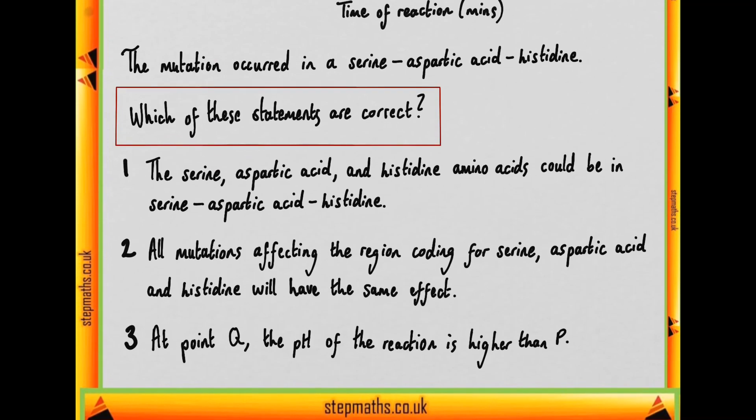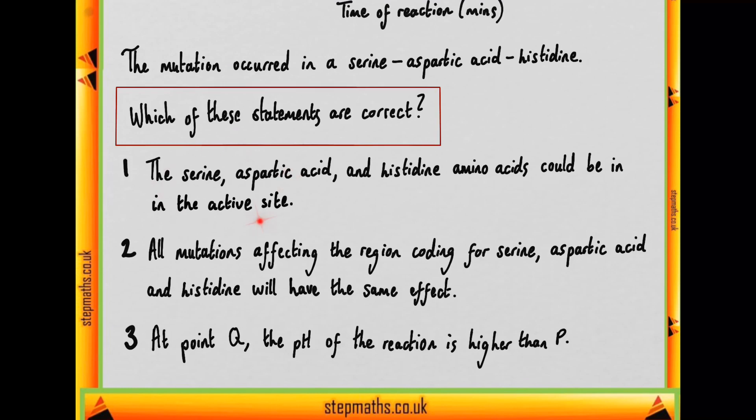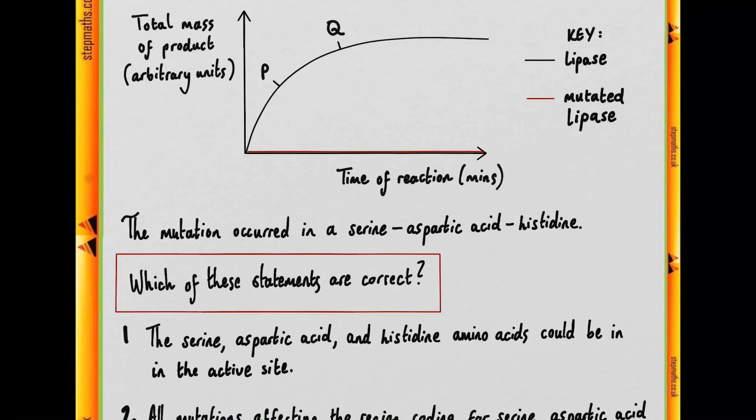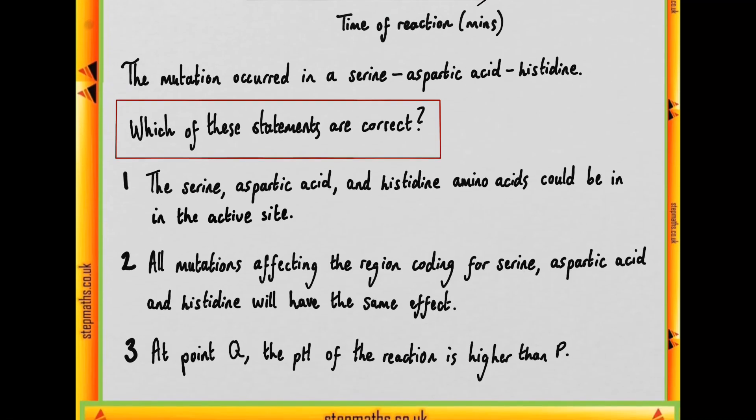Let's look at our first statement. The serine, aspartic acid, and histidine amino acids could be in the active site. They could be in the active site because there appears to be no activity between the enzyme and the substrate that the enzyme is targeting. It could be because of a mutation which then affects one of these amino acids, and therefore the active site can no longer bond to the substrate.